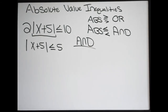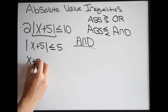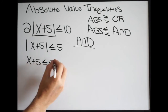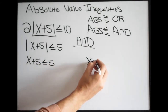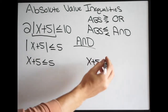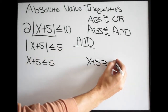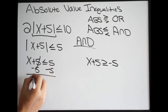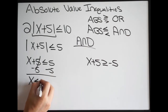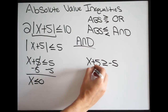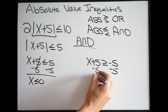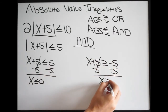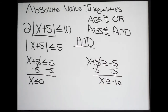We can go ahead and write out our two different inequalities. We write x plus 5 less than or equal to 5. Then our second one is x plus 5 — flip the inequality and change the sign — greater than or equal to negative 5. Let's go ahead and solve both of these. Minus 5 on both sides — this cancels — we get x is less than or equal to 0. For the other one, minus 5 on both sides — this cancels — we get x is greater than or equal to negative 10.